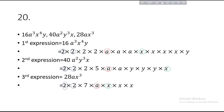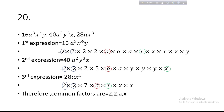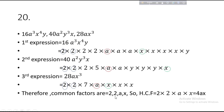So the common factors are: 2, 2 (from the coefficients), A, and X. The HCF is 2 × 2 × A × X, which equals 4AX. That's all from today. Thank you everyone. I am giving some homework — let's start with it.